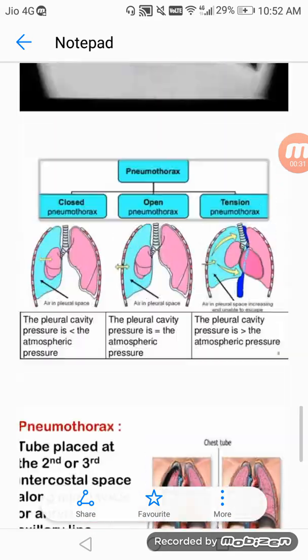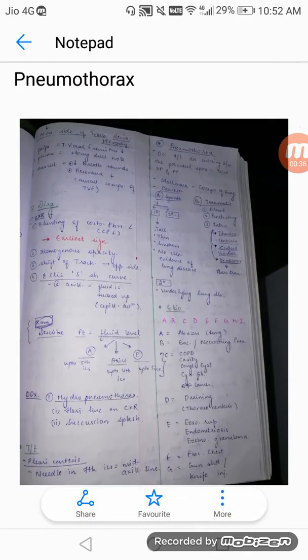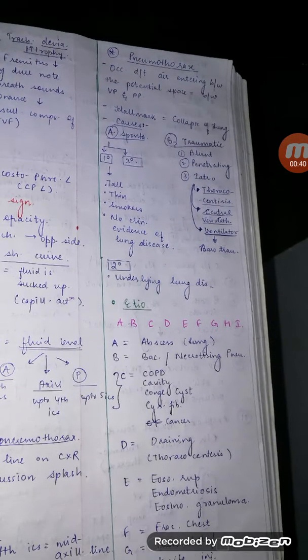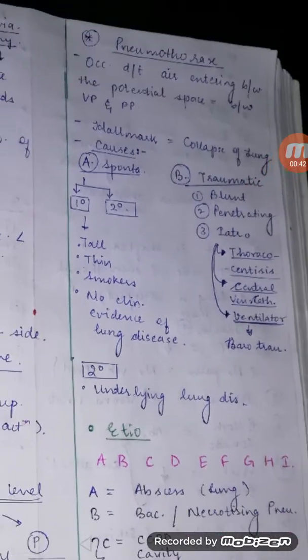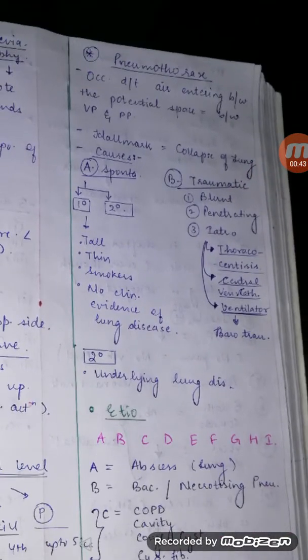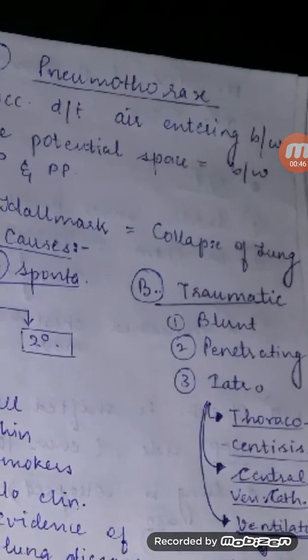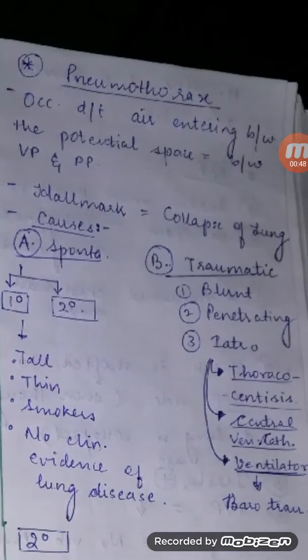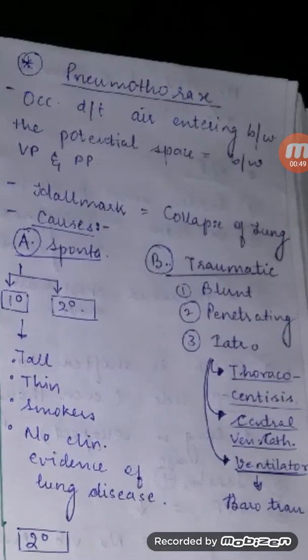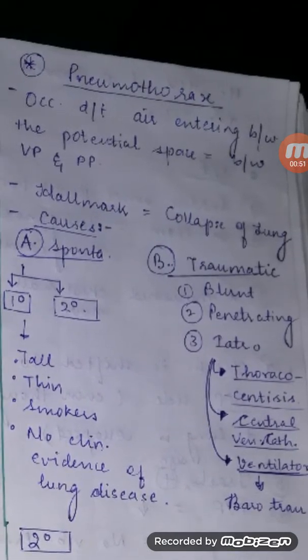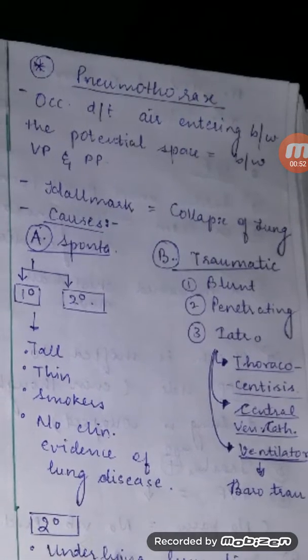What is pneumothorax? It is the presence of air between the visceral and parietal pleura. The hallmark is collapse of lung.